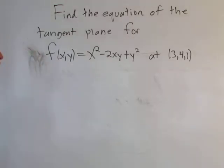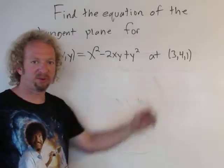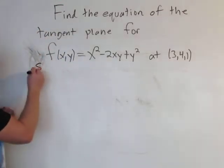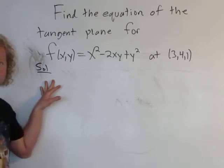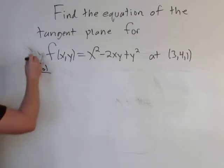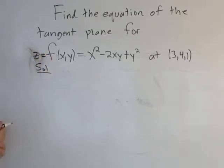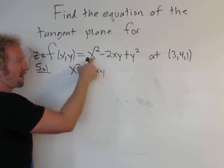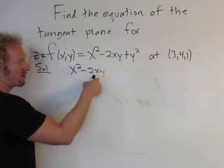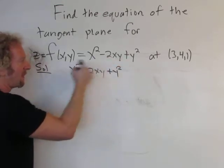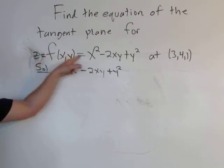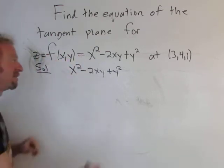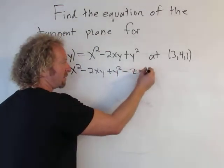Today we're going to find the equation of the tangent plane to this function at the point (3,4,1). What I like to do in these problems is start by calling the output Z, and then subtract Z from both sides. So we have x squared minus 2xy plus y squared minus Z, and that's equal to zero.